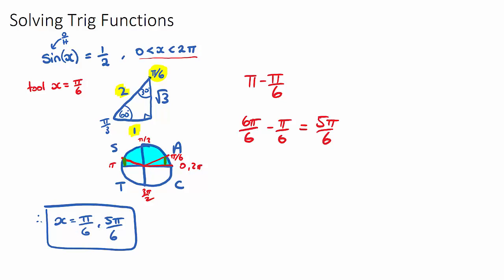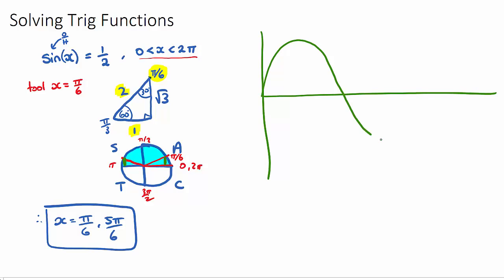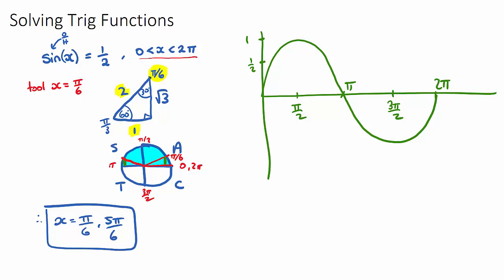I'll quickly draw what the graph looks like. A sine of x function looks like this, where this would be pi, this would be 2 pi, this here would be pi on 2, this here would be 3 pi on 2. What this question is saying graphically is: when is this function equal to positive a half? Positive a half would be here, and it's going to equal a half two times — here and here. Going down to find those values: this will be pi on 6, and this will be pi minus pi on 6, which is 5 pi on 6. So we can solve it using our magic triangles and unit circle, or graphically.